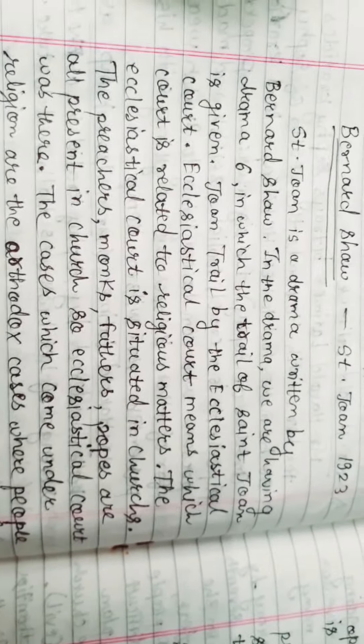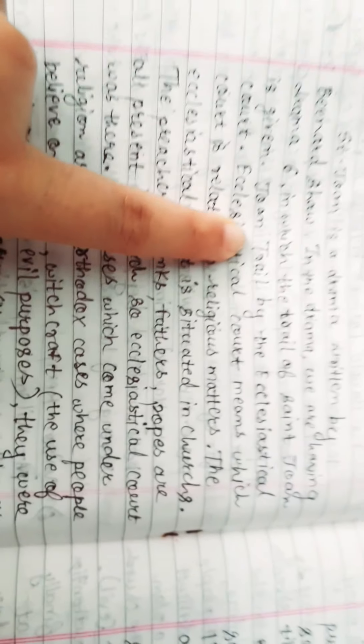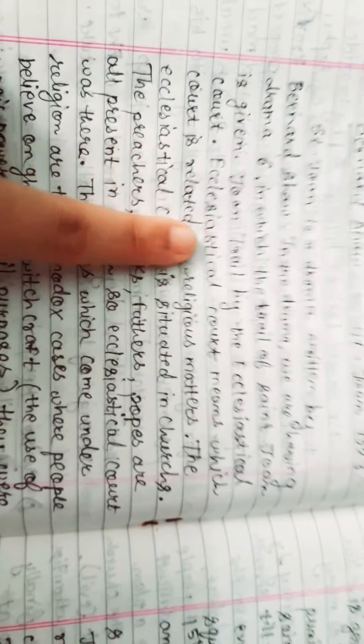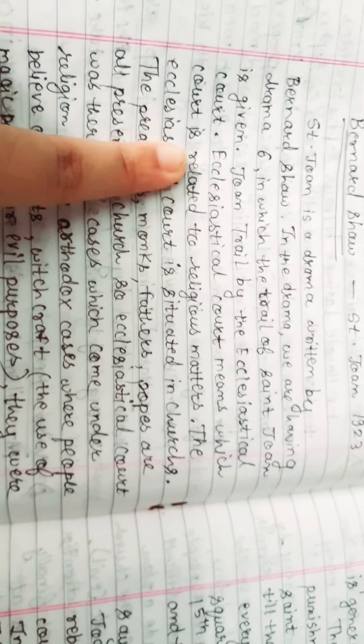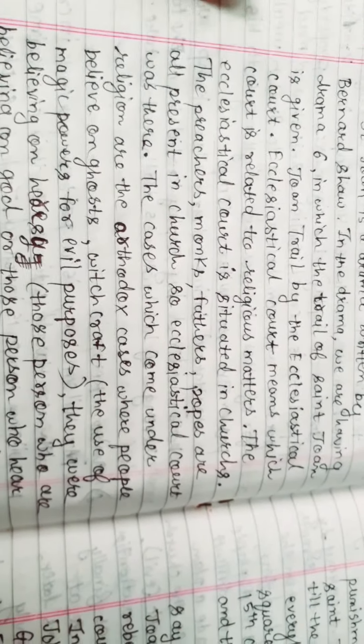In the drama we are having Scene 6 in which the trial of Saint John is given. John's trial was carried out by the ecclesiastical court. Ecclesiastical court means a court related to religious matters. The ecclesiastical court is situated in church.